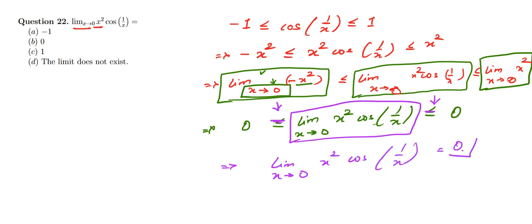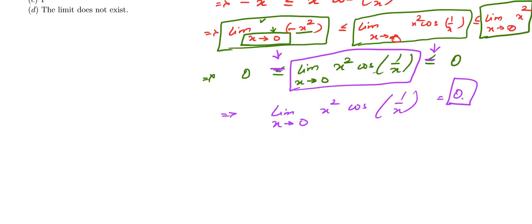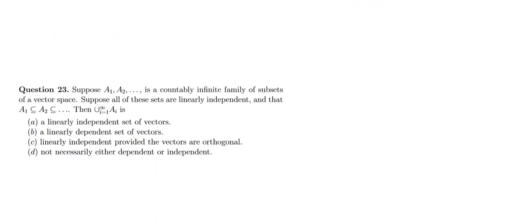So our answer is 0, that is option B. Hence option B is the correct answer to question 22. Solutions to further questions will be found in our next videos.